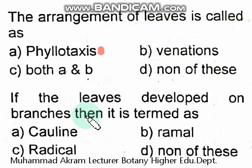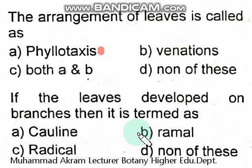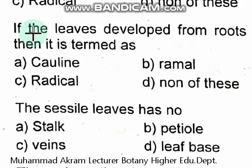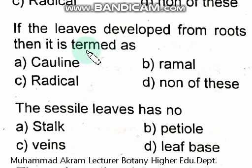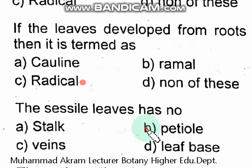If leaves develop on branches then it is termed as ramal. If the leaves develop from roots then it is called radical. Sessile leaves have no petioles.